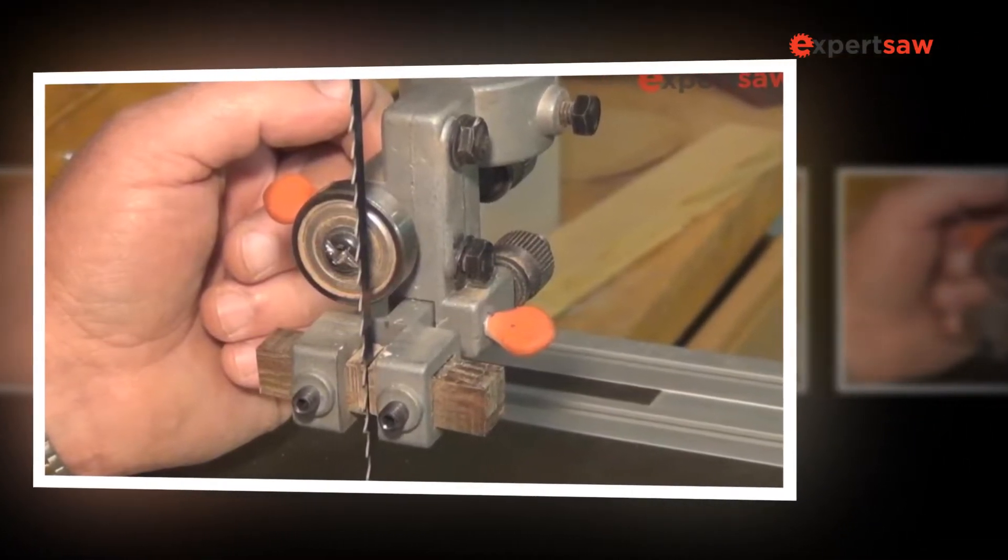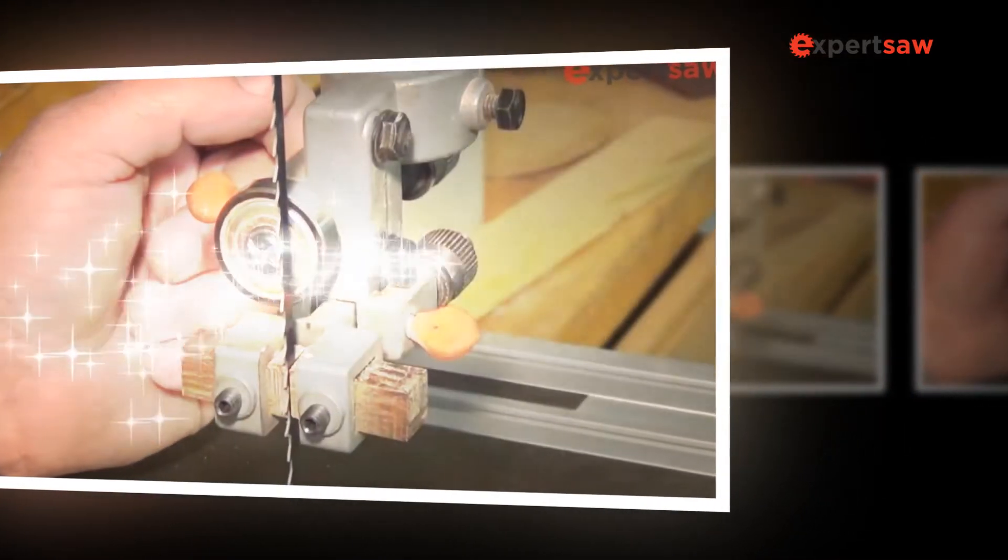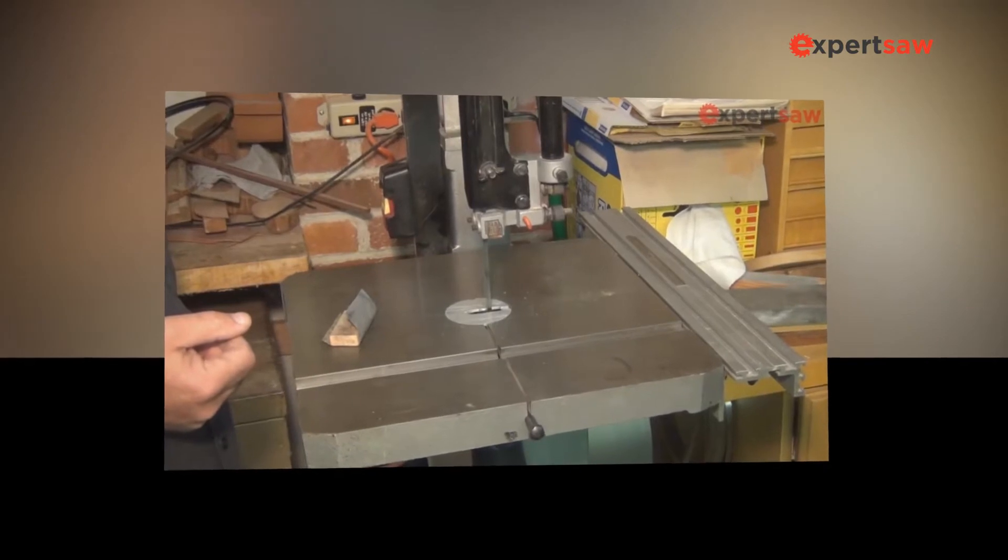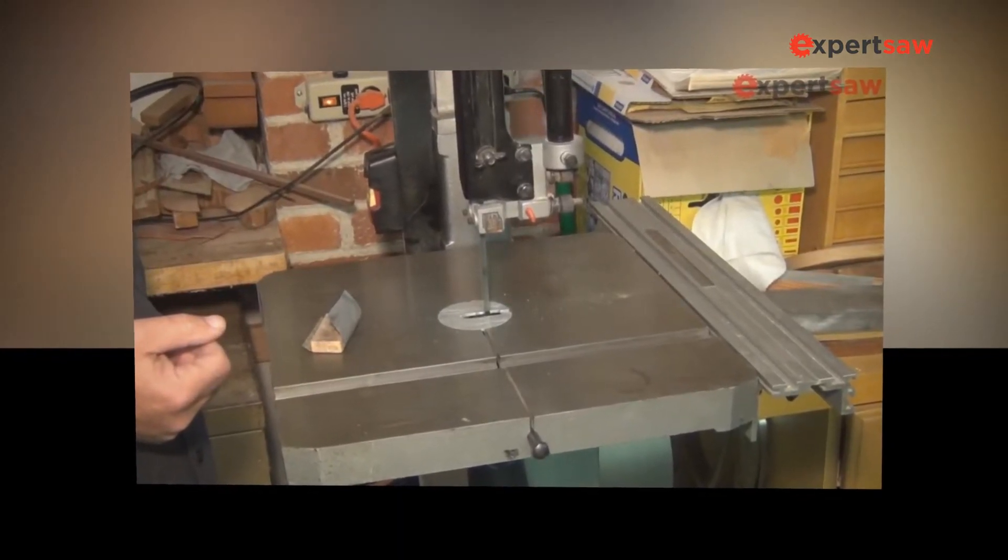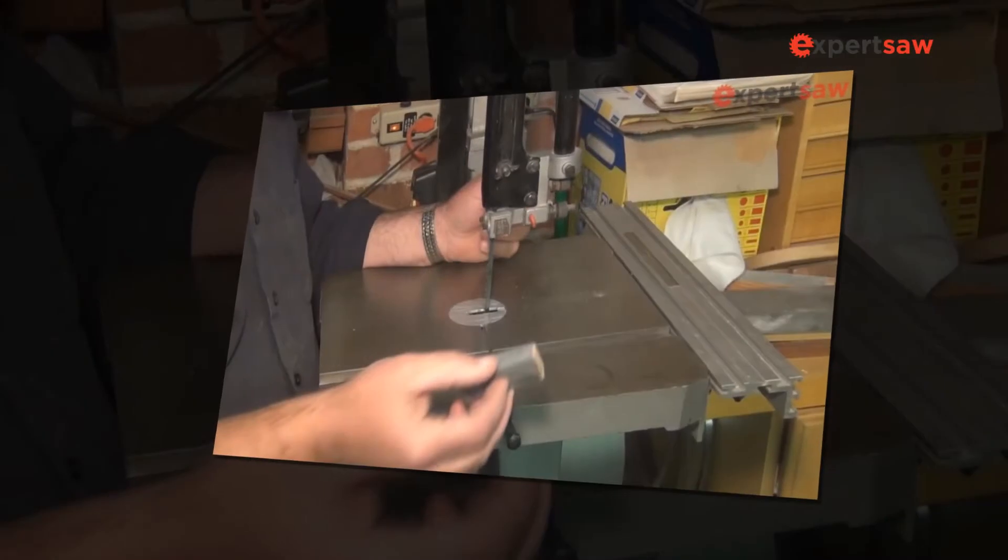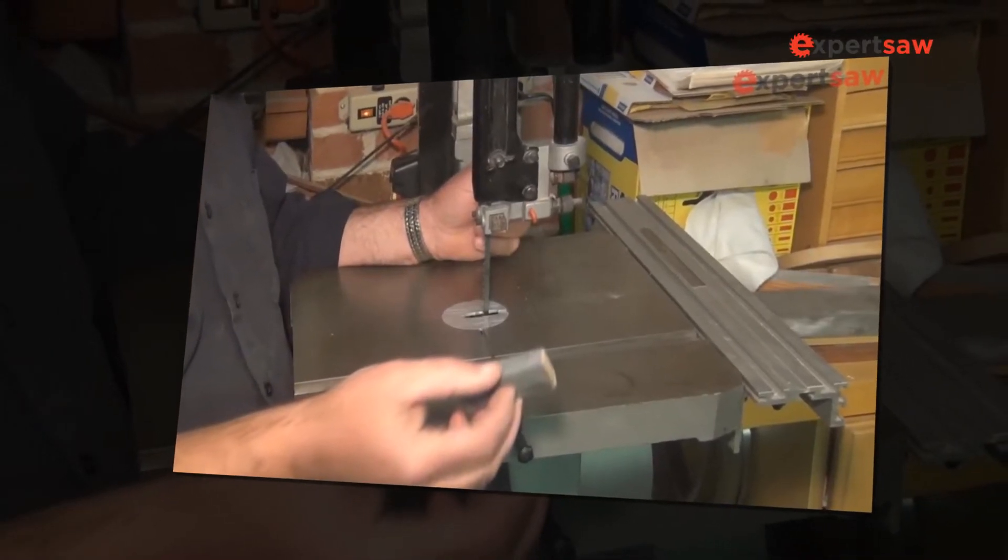Several accessories may also accompany the saw. Most saws will include a blade welder to connect the two parts of the blade's sharp-edged circle. Heavier duty saws will often have a coolant system to expand the life of the blade since a lot of heat is generated.